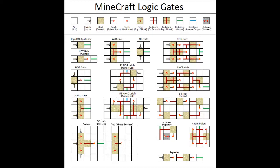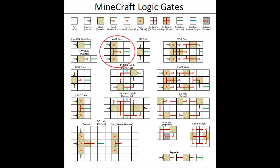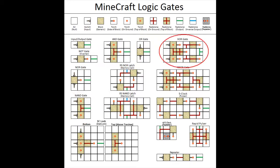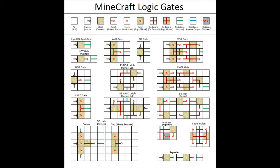There are as followed: a NOT gate, OR gate, NOR gate, AND, NAND gate, XOR gate, and XNOR gate. Sounds a bit complex, but don't worry, I will go into each one in more detail later.